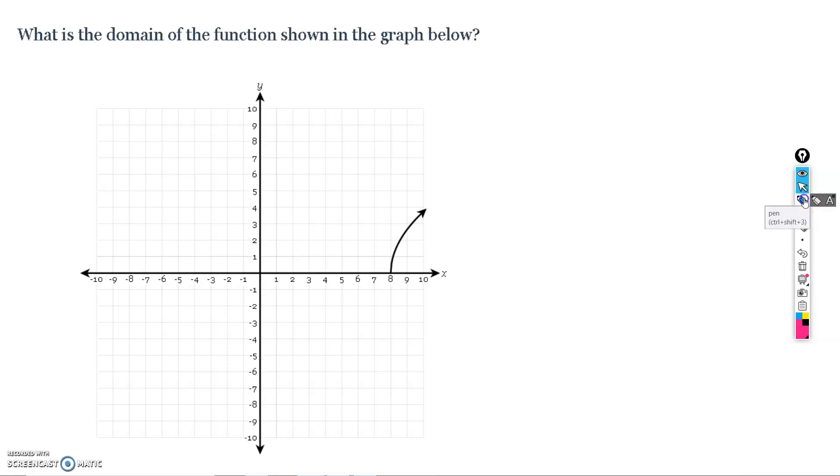All right, what about this function? How do I find the domain? So, again, the x value. So, I scan from left to right. Oh, this guy's a little different, though, because my function actually stops. At x equals 8. So, I'm not coming in from negative infinity this time. In fact, my function just doesn't even exist until positive 8.